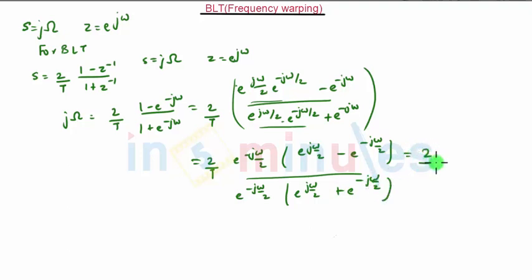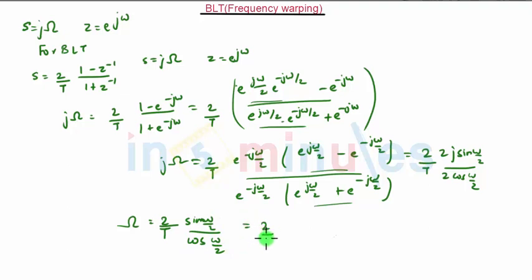That will be (2/T)(2j·sin(ω/2))/(2·cos(ω/2)). Now we can see this is the formula for sin(ω/2). The j terms cancel, and finally we get Ω = (2/T)·sin(ω/2)/cos(ω/2), that is (2/T)·tan(ω/2).